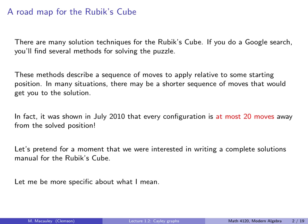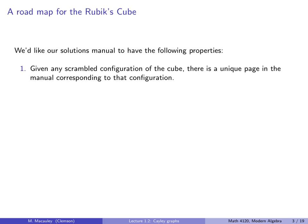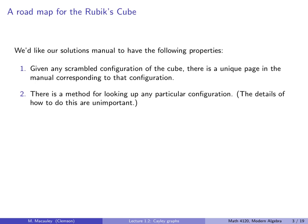Okay, so let's get back to tasks now. Let's pretend for a moment that we are interested in writing a complete solutions manual for the Rubik's Cube. Now let me be a little more specific about what I mean. Okay, so we'd like our solutions manual to have the following properties. First of all, given any scrambled configuration of the cube, there's a unique page in the manual. Think of it like a book corresponding to that configuration. And there is a method for looking up any particular configuration. I don't really care how, but there's a way to do it.